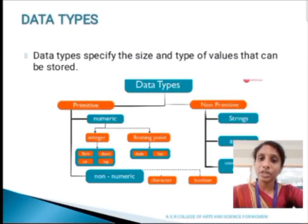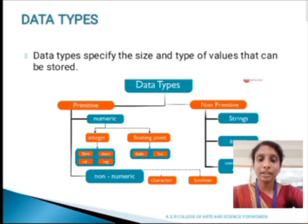Next, we are going to see about data types. A data type specifies the size and type of the values that can be stored in the variables. A data type is classified into two types: one is primitive, another one is non-primitive. A primitive is further divided into numeric and non-numeric. Non-primitive is divided into three types: string, array and user defined methods.